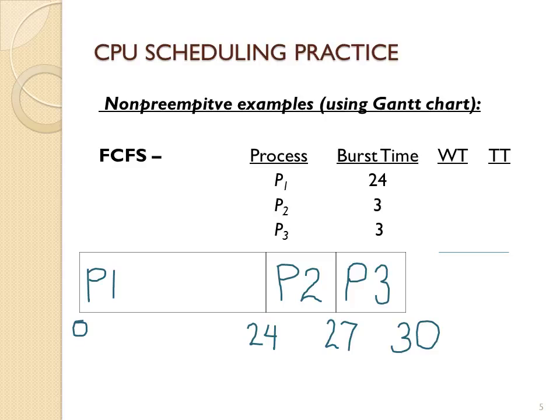Once we have the processes on our Gantt chart, we can start calculations — per process first, then averages. Calculating wait time, assuming all processes arrived at time zero: P1 waited 0 time units to get the CPU, P2 waited 24 time units, and P3 waited 27 time units. The average wait time comes out to 17 time units.